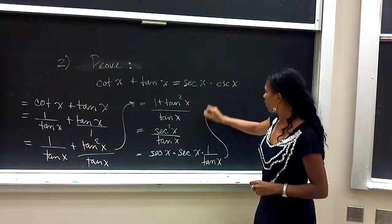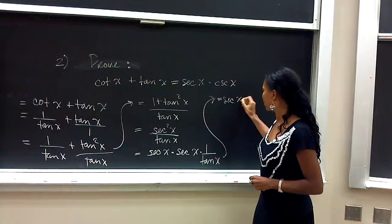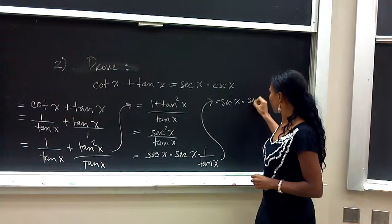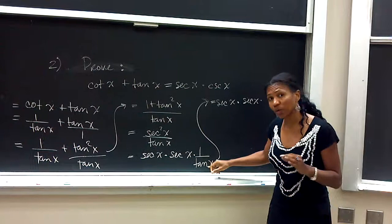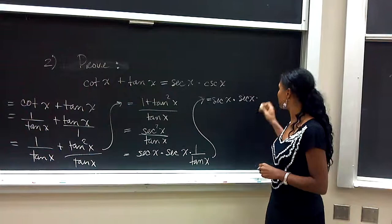We simplify this to be secant x times secant x. 1 over tangent x is equivalent to the reciprocal of tangent x.